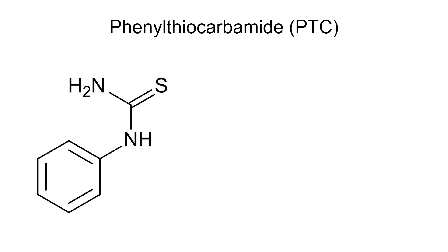Phenyl-thiocarbamide is a lab-created molecule with similar properties to the bitter-tasting chemicals found in broccoli. Did you know that about 25% of the human population cannot taste phenyl-thiocarbamide? The ability to taste PTC is determined by a single gene in our bodies, meaning it's an inherited trait from our parents. Most of us think that PTC has an awful bitter taste, but a select few can't taste anything at all.